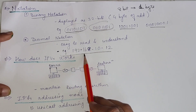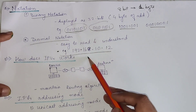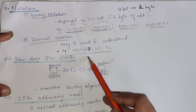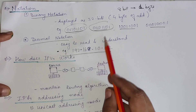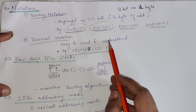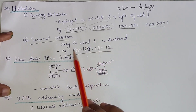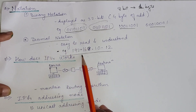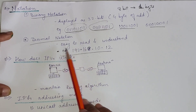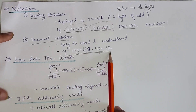We can convert decimal to binary and binary to decimal according to the requirement. That's why most of the time we use the decimal notation for expressing the IPv4 address.